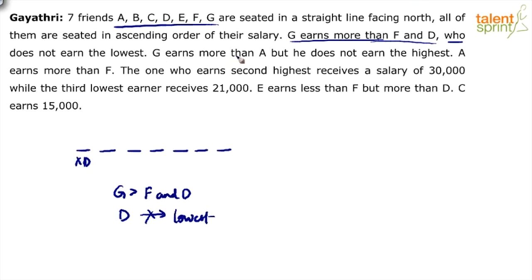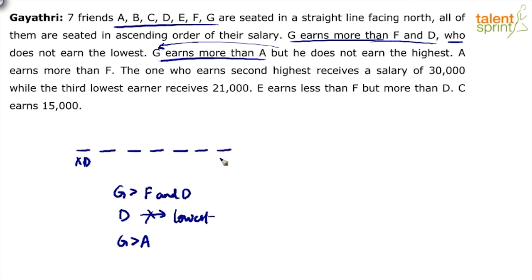G earns more than A, but G does not earn the highest. So G is greater than A. If G does not earn the highest, G cannot come in the last position. We have made a note of that point.